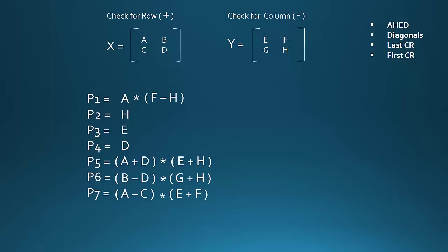Now consider P2. In P2 we have H. The opposite corresponding element of H is D. And since we are in X we will consider for rows. The opposite row is AB, and since it is a row we will write A plus B.